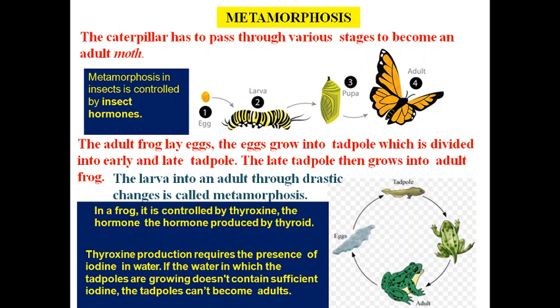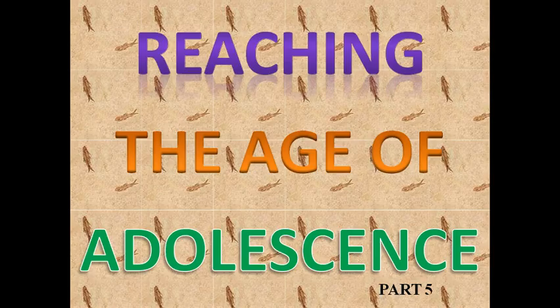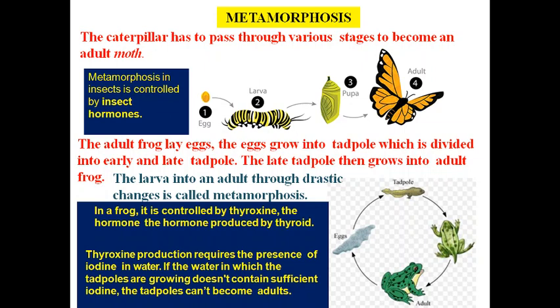Thyroxine production actually requires the presence of iodine in water. If the water in which the tadpoles are growing doesn't contain sufficient iodine, the tadpoles cannot become adults. This concludes today's session.